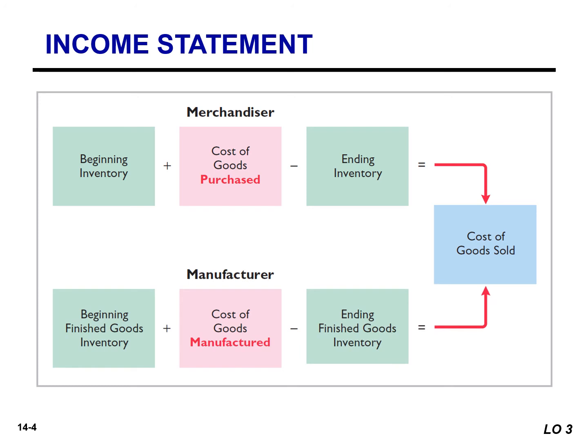Manufacturers calculate the cost of goods sold in a similar manner, except we're going to start with our beginning finished goods inventory. We're going to add our cost of goods manufactured and subtract our ending finished goods inventory to arrive at our cost of goods sold.